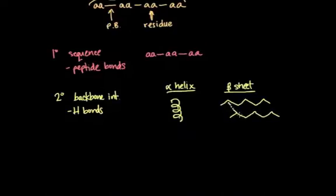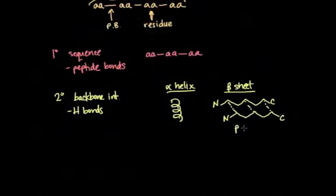And the beta sheet is stabilized by hydrogen bonds, just like so. And if you have the amino ends and the carboxyl ends line up, like so, then this sheet is called a parallel beta sheet.